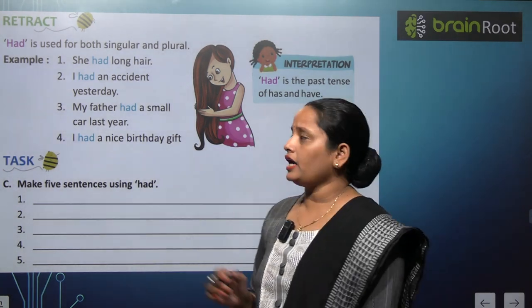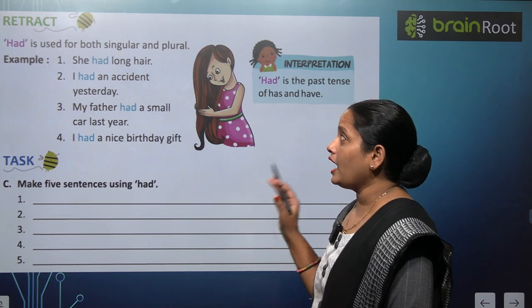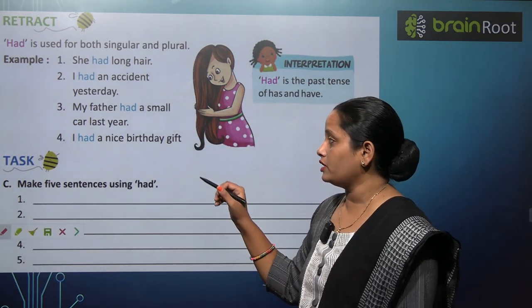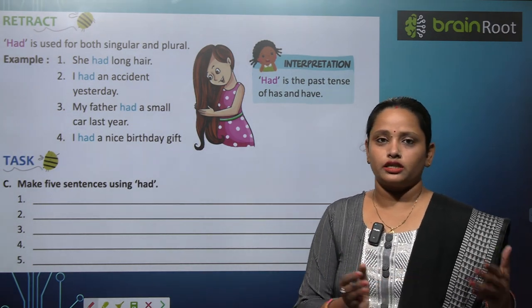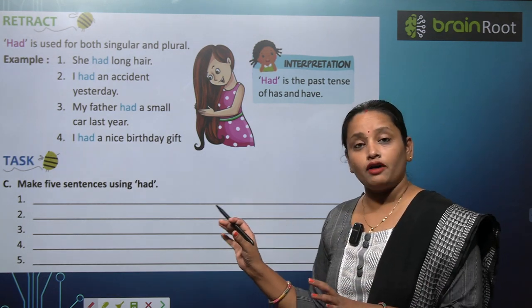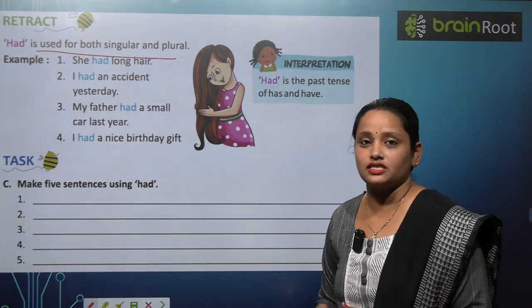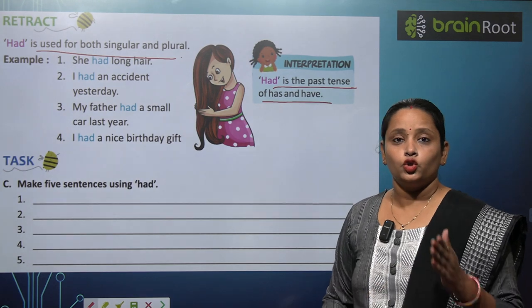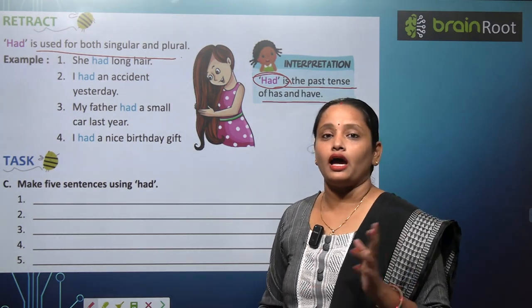Now let's move on to had. Had is used for both singular and plural. Had jo hai singular ke liye, means one ke liye bhi use hota hai, aur plural means many ke liye bhi use hota hai. Ab aapko kaise pata chalega? So children, had is used with both singular and plural, but in the case of past tense. Had is the past tense of has and have — dono ka past tense hai had.